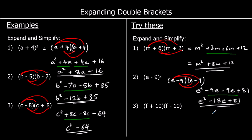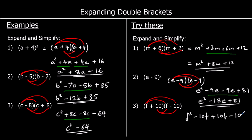And for the last one, which is going to be the difference of two squares, we do f times f, f times negative 10, 10 times f, and 10 times negative 10. f times f is f squared. f times negative 10 is negative 10f. 10 times f is 10f. And 10 times negative 10 is negative 100. Collecting the like terms, negative 10 plus 10 is nothing. So we have f squared minus 100.